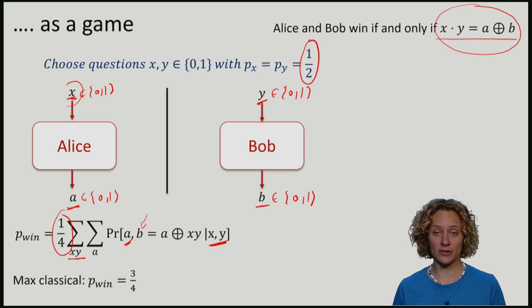The genius of John Bell was actually to realize that in such simple games, quantum can achieve a higher winning probability. So using a quantum strategy, Alice and Bob can do better, even though they cannot communicate during the game.